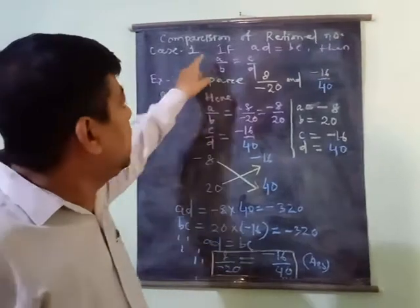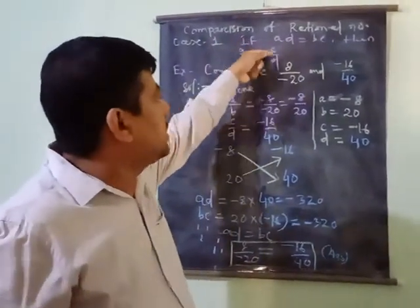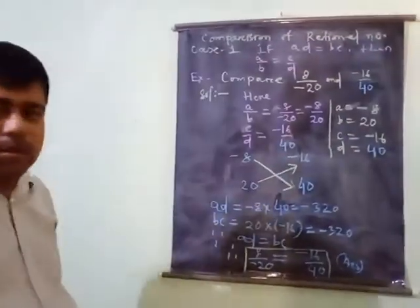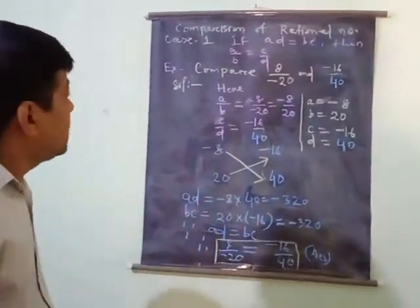Here you will learn that if in the rational number A by B and C by D, if AD is equal to BC, then the two rational numbers are equal. Let us come to the second case.